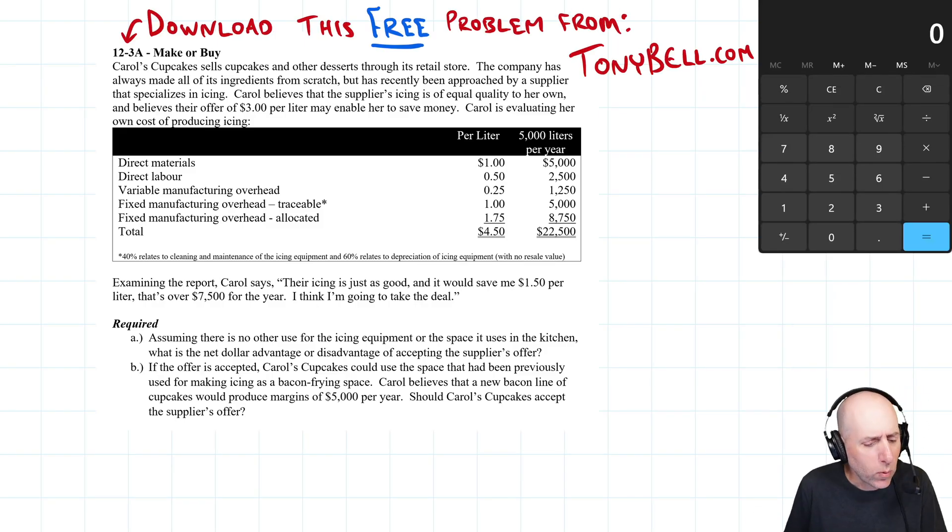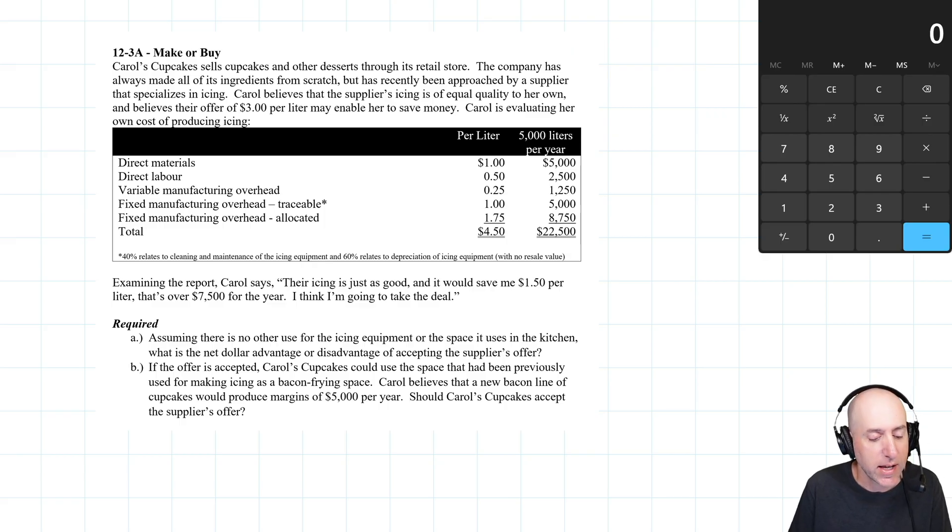Let's take her on through problem 12-3a, a make or buy decision. Carol's Cupcake sells cupcakes and other desserts through its retail store. The company has always made all of the ingredients from scratch, but has recently been approached by a supplier that specializes in icing. Carol believes that the supplier's icing is of equal quality to her own and believes their offer of $3 per liter may save her company money. Carol is evaluating her own cost of producing icing.